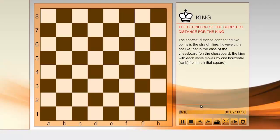The definition of the shortest distance for the king. The shortest distance connecting two points is the straight line. However, it is not like that in the case of the chessboard. On the chessboard, the king with each move moves by one horizontal or rank from his initial square.